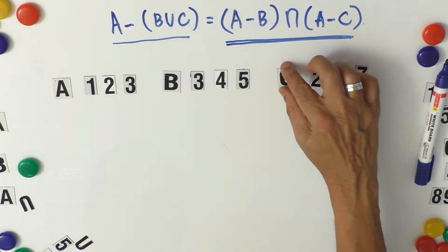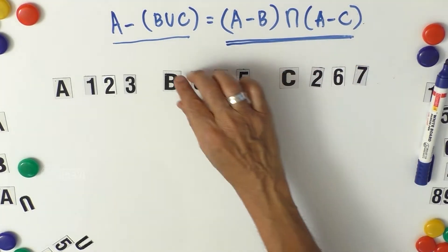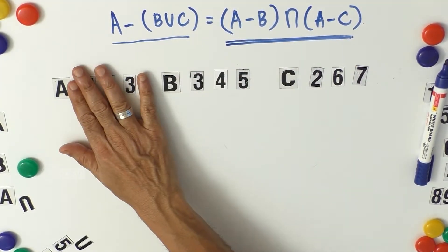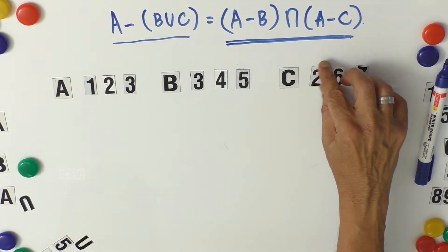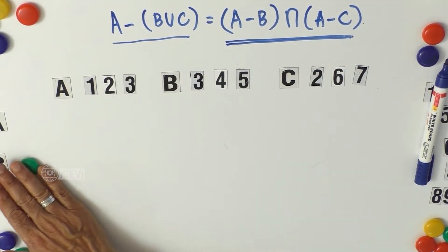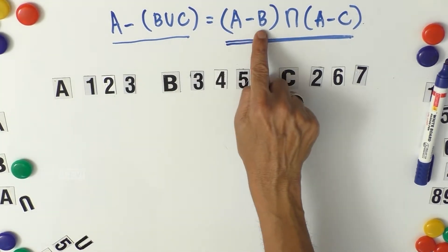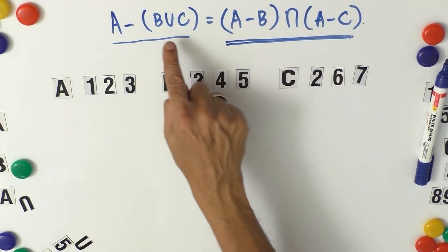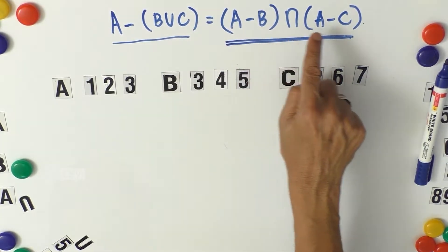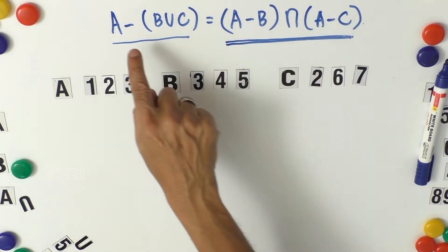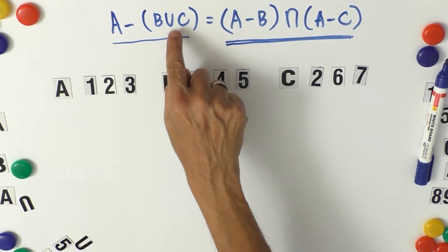So in the problem here, we have three sets A, B, C, with three elements in each set. Now we have to find out the values A minus B, A minus C, B union C, and then A minus B intersection A minus C and A minus B union C.